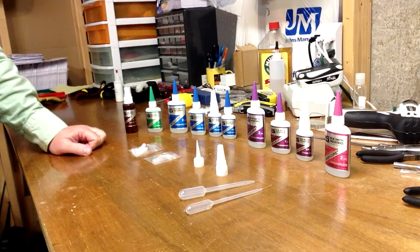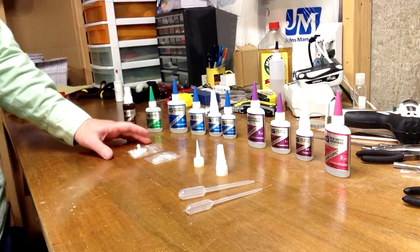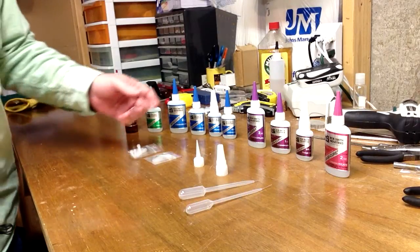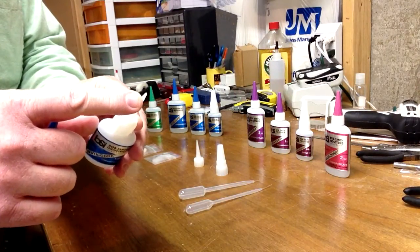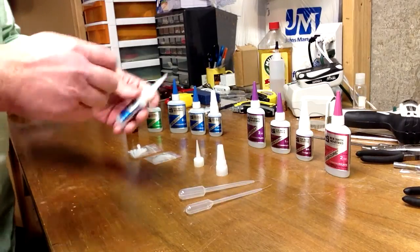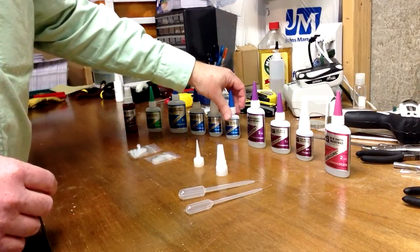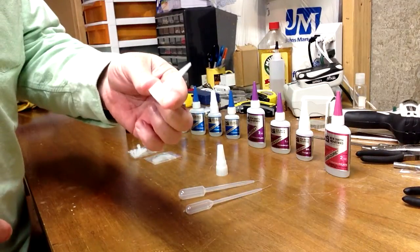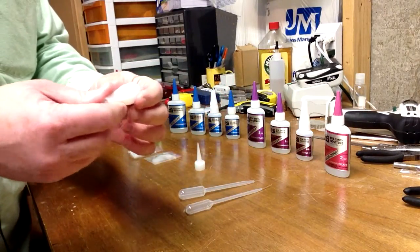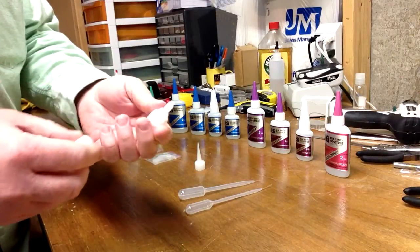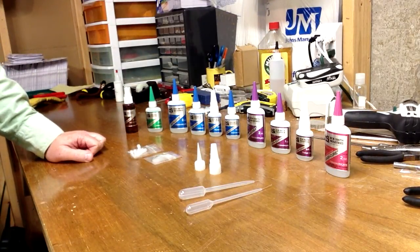Now we also sell replacement tips for the bottles because sometimes the tips can get clogged up. They come with such a fine point to be able to get into small areas. Sometimes those tips can get clogged up. So for the one ounce or the half ounce, one ounce and two ounce bottles, we sell replacement caps. I think they come in sets of three that we sell them in. And then for the three quarter ounce, we also sell replacement caps in sets of three as well. So those are available as well, and sometimes it's good to get those when you're buying the CA glue in order to have those available if you get a clogged cap.